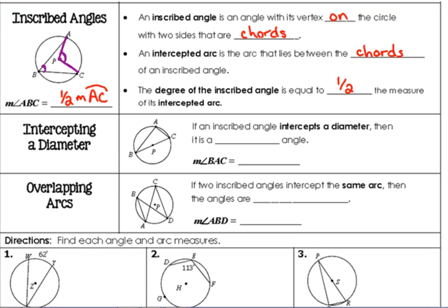Intercepting a diameter. If an inscribed angle intercepts a diameter, then it is a right angle. Because, let's think about it. The angle at A is the inscribed angle. So if we look at what it intercepts, it intercepts half of our circle right here. Half of our circle is 180 degrees, so its measure is half of that, so it is 90 degrees. The measure of angle BAC is 90 degrees. You do have a right angle right there.